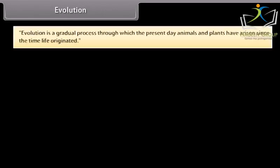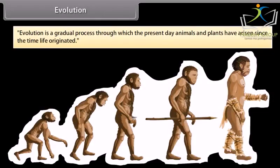Evolution is a gradual process through which the present-day animals and plants have arisen since the time life originated.